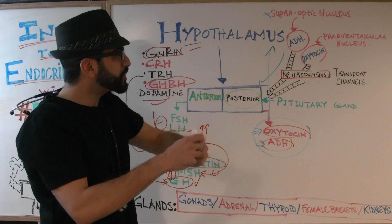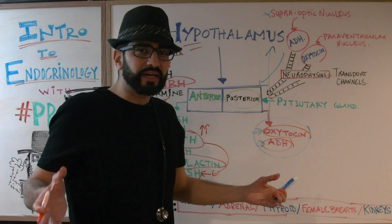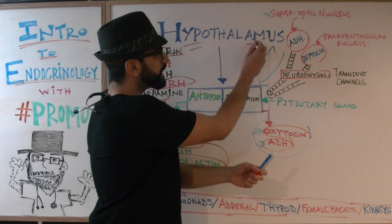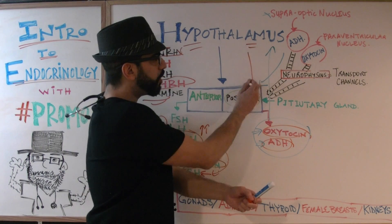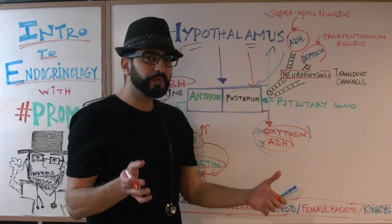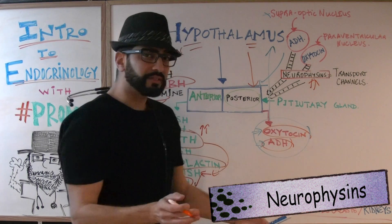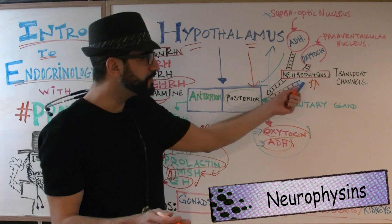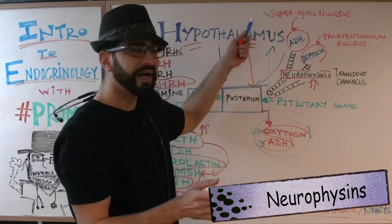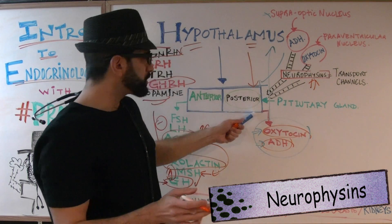Once those two hormones are made, they need to get to the posterior pituitary gland. They travel through specialized channels — think of it like a train carrying these hormones from the hypothalamus all the way to the posterior pituitary gland. These specialized channels are called neurophysins.